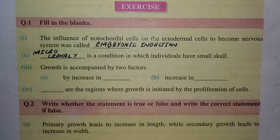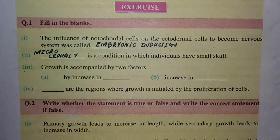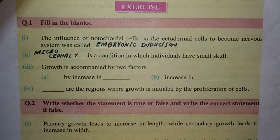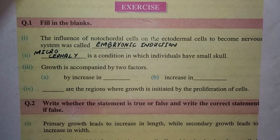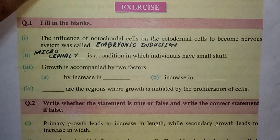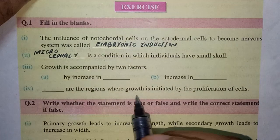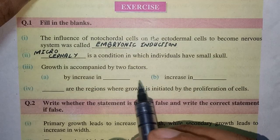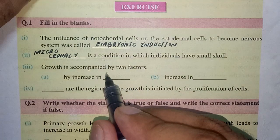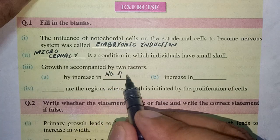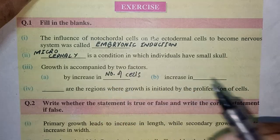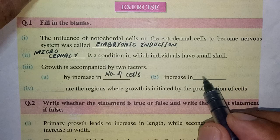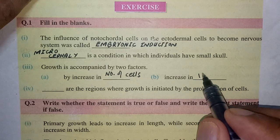Growth is accompanied by two factors: Option A is by increase in X, and Option B is by increase in Y. Growth occurs by increase in number of cells and by increase in volume.